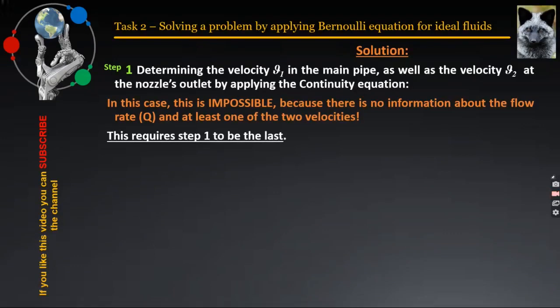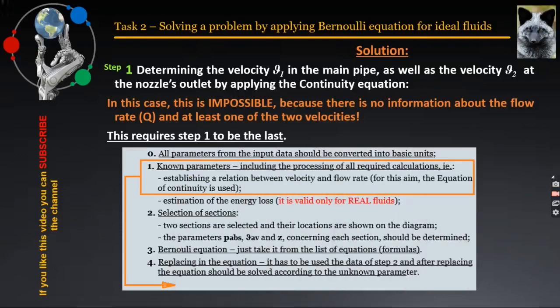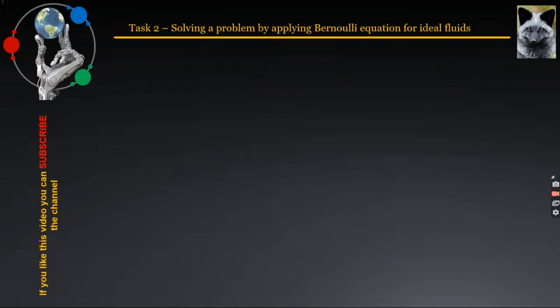To make it completely clear, this action is illustrated and presented on the slide. In this case, we go directly to step 2, in which it is necessary to select the two sections for which we must further apply the Bernoulli equation. Here you can feel some hesitation about where exactly to choose them. It is logical for some to assume that one section should be at the connection joint point of the manometer.